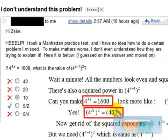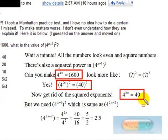Okay, so what do we do now? Well, we can just cancel out the exponents and just get 4 to the 2x equals 40.